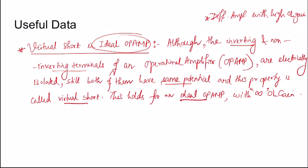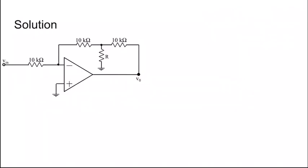Coming to the solution, this is the given circuit and we need to find the value of R. By the property of virtual short, we can write that if this is B and this is A, then potential at A equals potential at B equals 0.